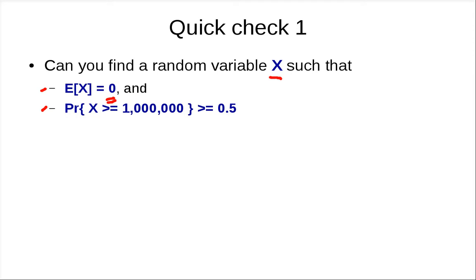Alright, we want the expectation to be 0. If you look at the probability distribution of X, the average has to be 0, but you want X to be at least a million with this much probability. Let's try: X equals a million with probability 0.5.